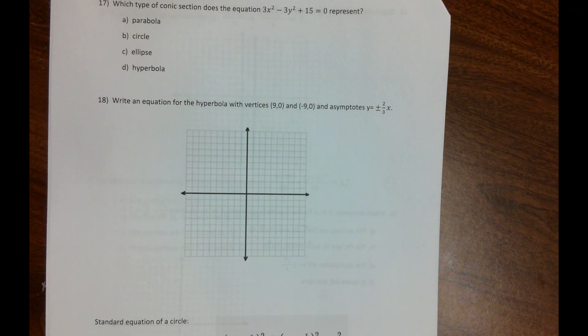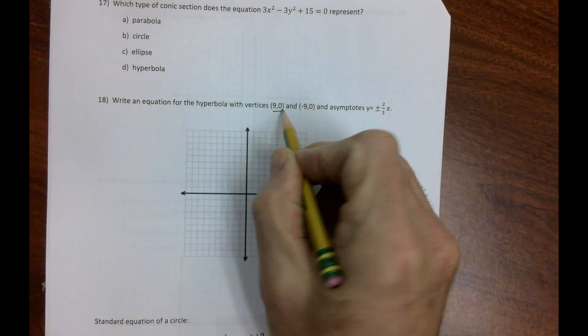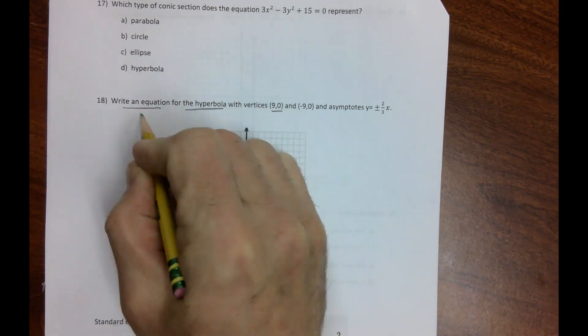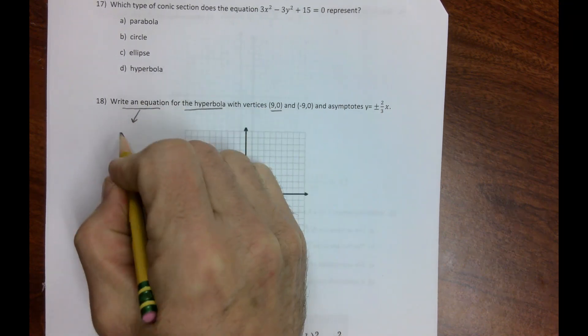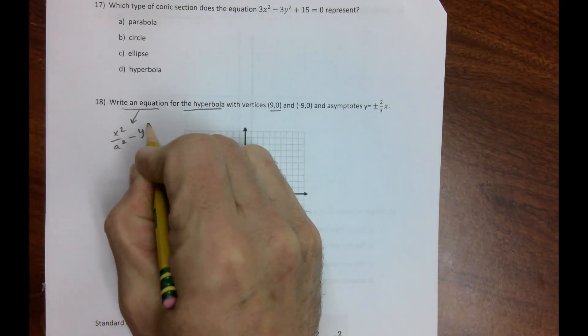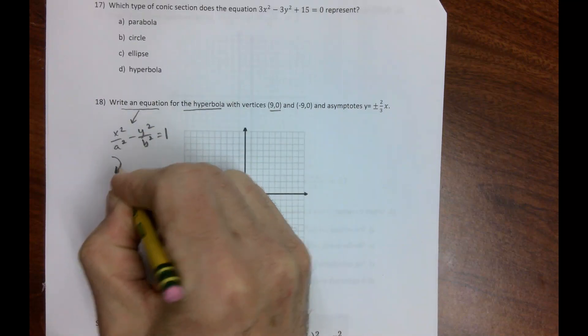Problem 18: Write an equation for the hyperbola with vertices at (9,0) and (-9,0). Let's get started. The standard form for a hyperbola is x²/a² - y²/b² = 1.